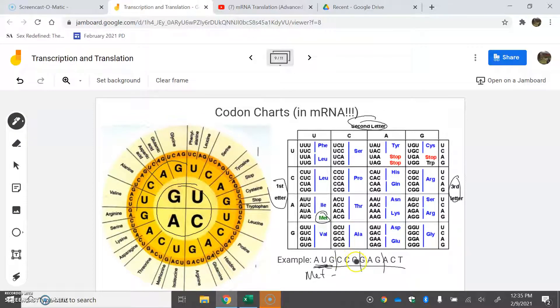The next one would be CCC. Using this box, C, C, and C - that would be proline. Now if we wanted to use the circle, it's the same exact thing. GAG - we start in the middle, G, then A, then G. That would be glutamine. You usually write the first three letters.